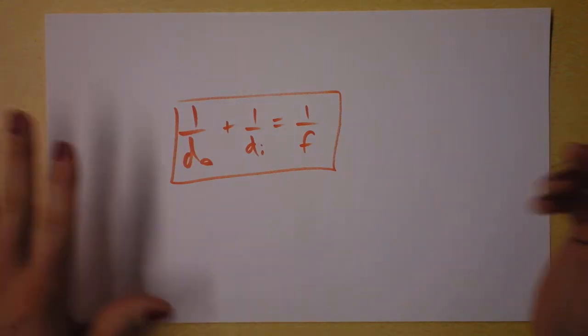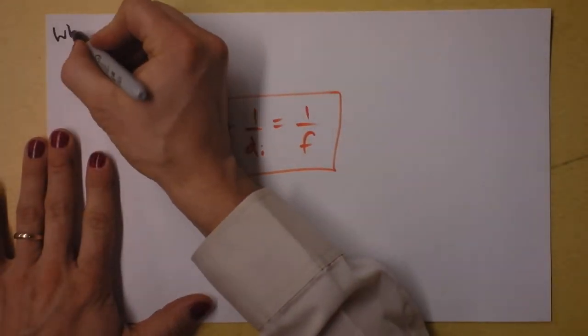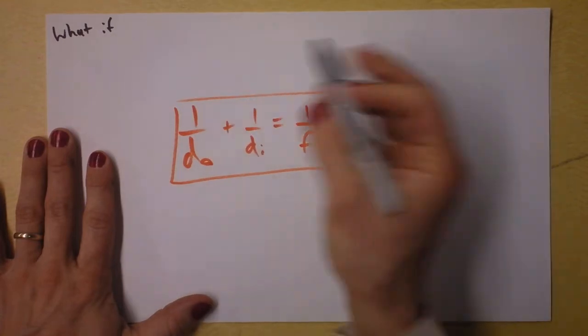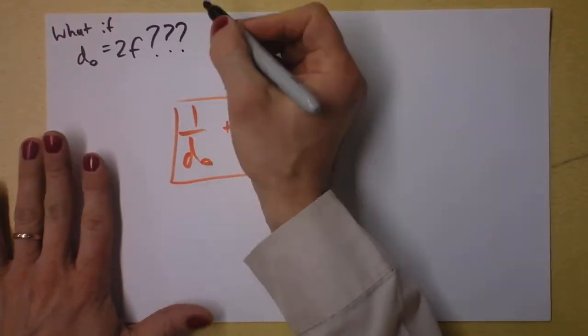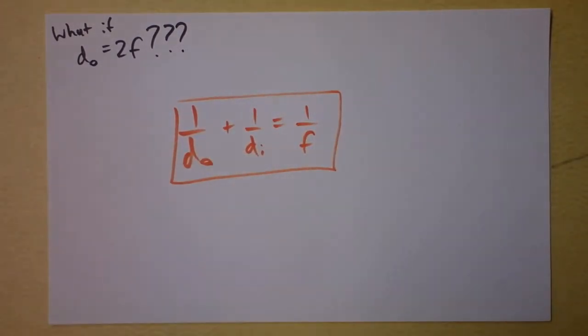First let's consider, well this is a nice special case: what if the object is located at twice the focal length? Get you three question marks right there. So you're thinking...